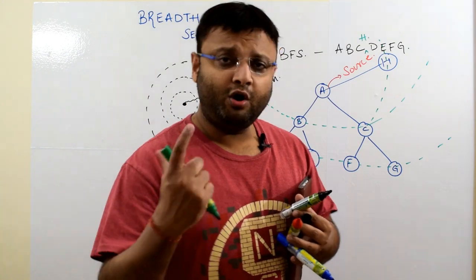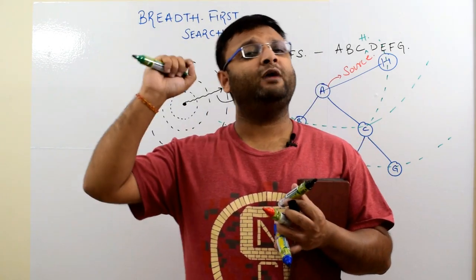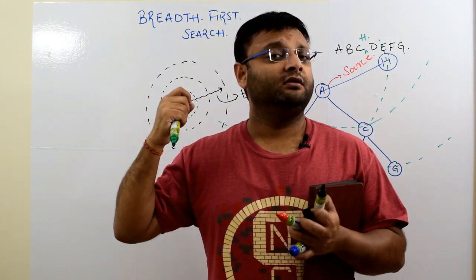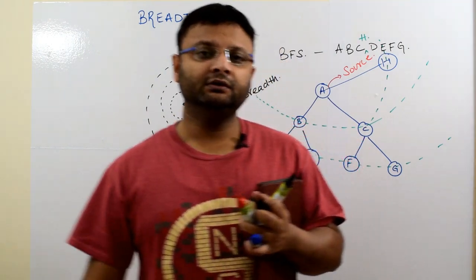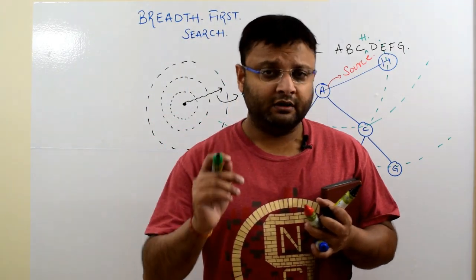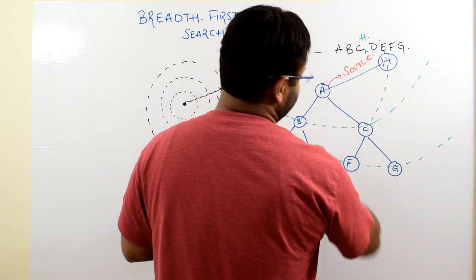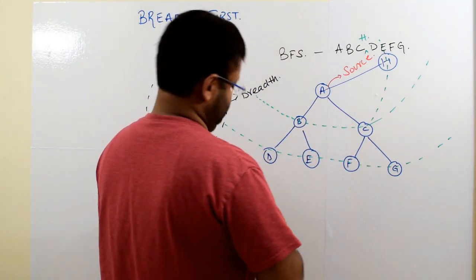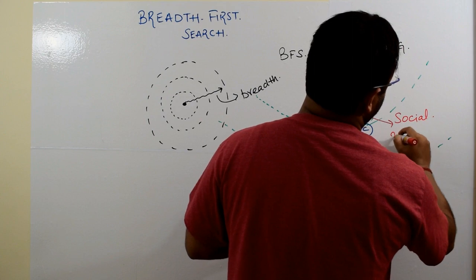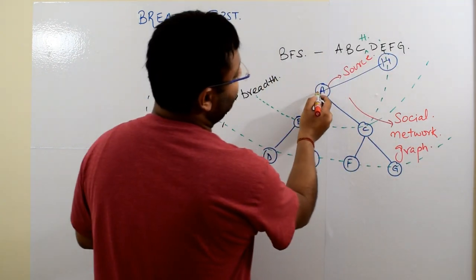Now, having got this introductory idea, if I ask you a simple question, you must be able to have a starting point of thinking that what could be its applications? So breadth first search has many applications in the practical world. Now, one example could have been, for example, you can imagine this as your social networking graph, right? With U as A.